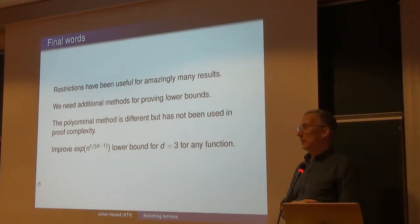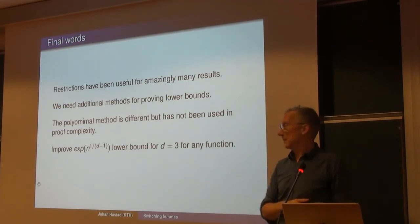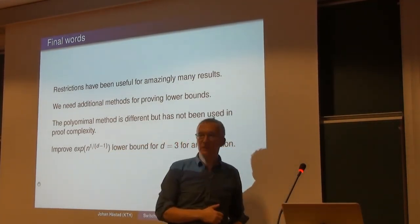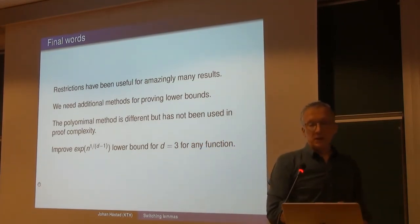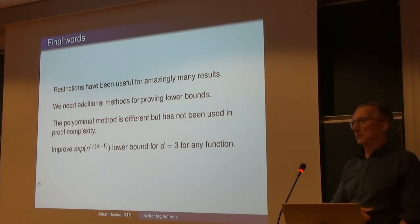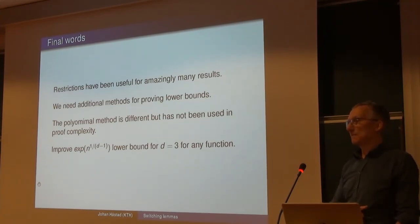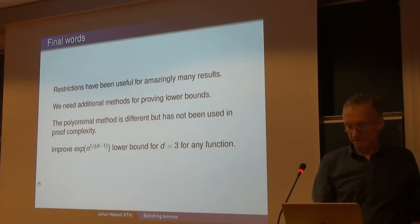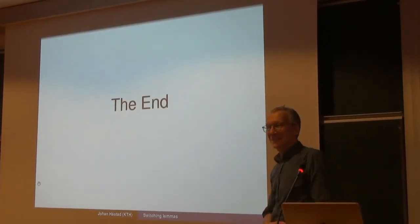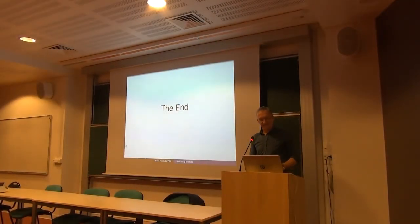We want more methods. I talked about restrictions and switching lemmas, which have produced the most results. There's also the polynomial method by Razborov, which hasn't yet found use in proof complexity because it doesn't mix well with that setting. We want lower bounds better than either method can give — both methods stop at N^(1/(D-1)). Already for depth 3 we don't know how to do something better: we can't prove a lower bound better than 2^(sqrt(N)) for depth-3 circuits. We can't even understand depth-3 circuits. Thank you.